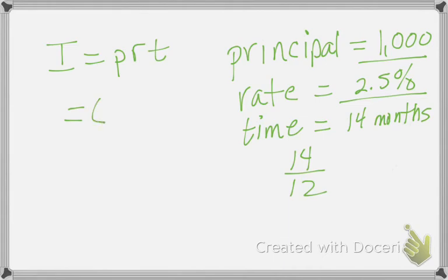To use the formula, I'll do 1,000 times 0.025—you know you need to convert the rate into a decimal. Then, instead of converting the time to a decimal, I'll multiply by 14 over 12.